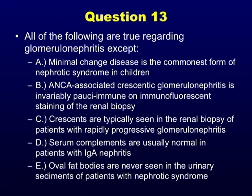Question 13. All of the following are true regarding glomerulonephritis except: oval fat bodies are never seen in the urinary sediment of patients with nephrotic syndrome. That is false — oval fat bodies ARE seen in nephrotic syndrome. In nephrotic syndrome, the urinary abnormalities include free fat appearing as Maltese crosses under polarizing light, fatty casts, and oval fat bodies — large round cells with dark pigmented cholesterol inside.